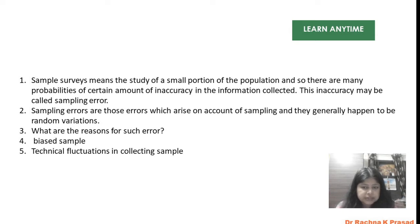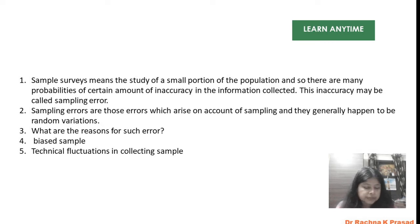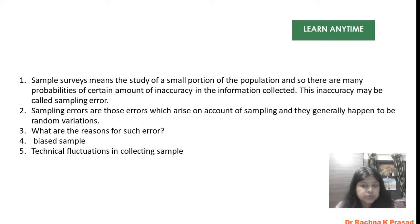What are the reasons for such errors? Why do these errors occur in survey research? No survey or research is perfect. First, because it is social science research. Second, in social science research, there are some human errors, some technical errors, and some errors that are related to our values.